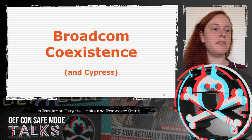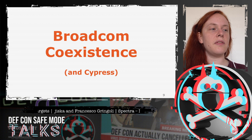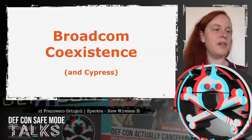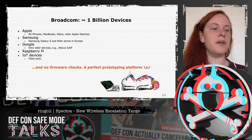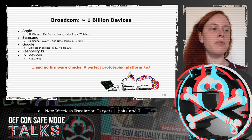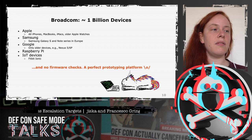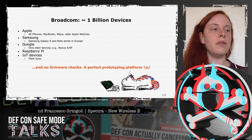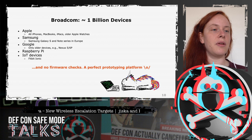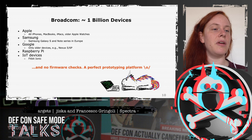The focus is on the Broadcom coexistence interface, also present in Cypress chips since Cypress acquired parts of Broadcom in 2016. Broadcom is a nice target because they do no firmware checks — no secure boot, no signature checking — so if you can reverse engineer parts of the firmware you can also patch it within Wi-Fi and Bluetooth. These chips are in many devices: all iPhones, MacBooks, iMacs, older Apple Watches, Samsung Galaxy S series, older Google Nexus phones, Raspberry Pi, and various IoT devices.